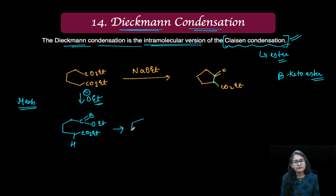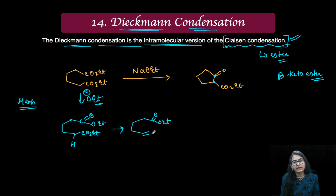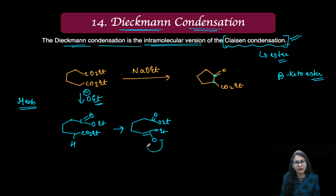Further, after the proton abstraction, you are going to have the ester enolate like this — O⁻ and OEt. I hope that you can follow this.